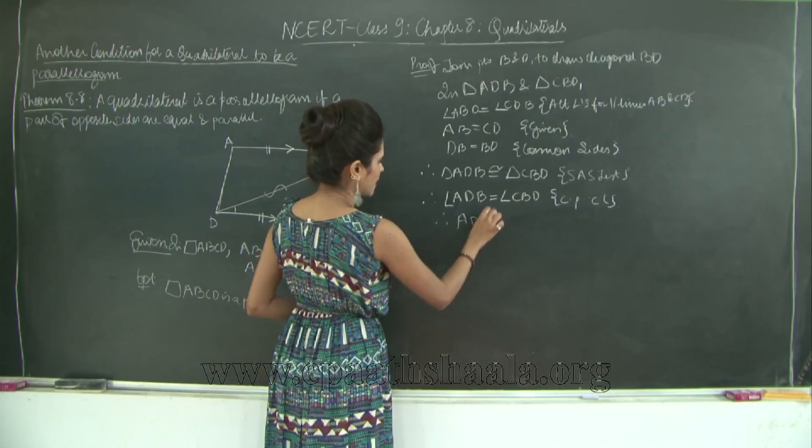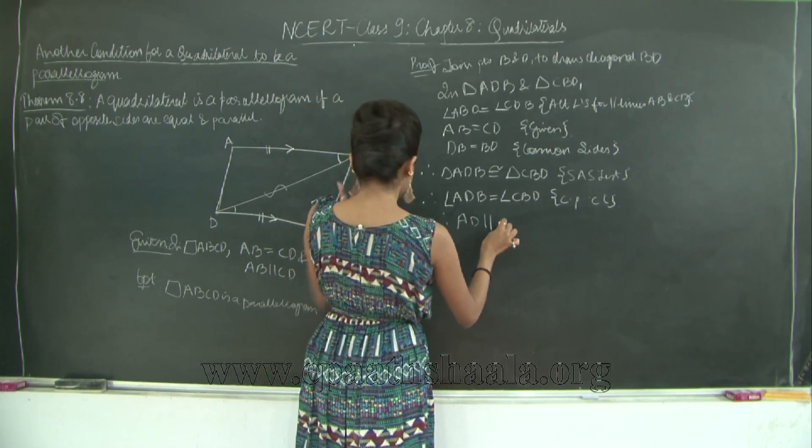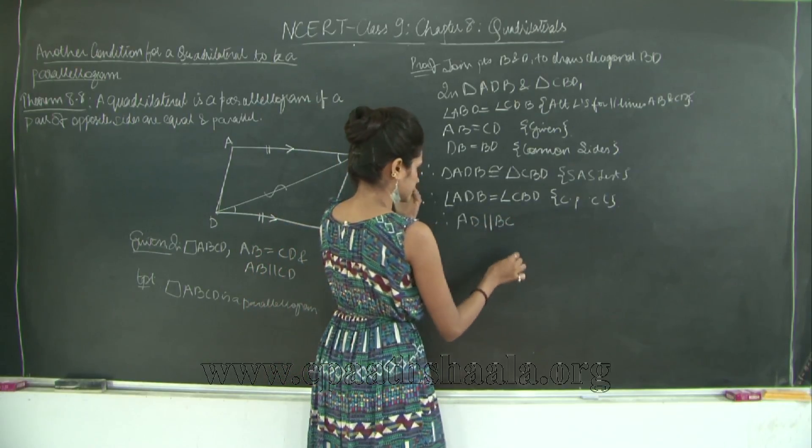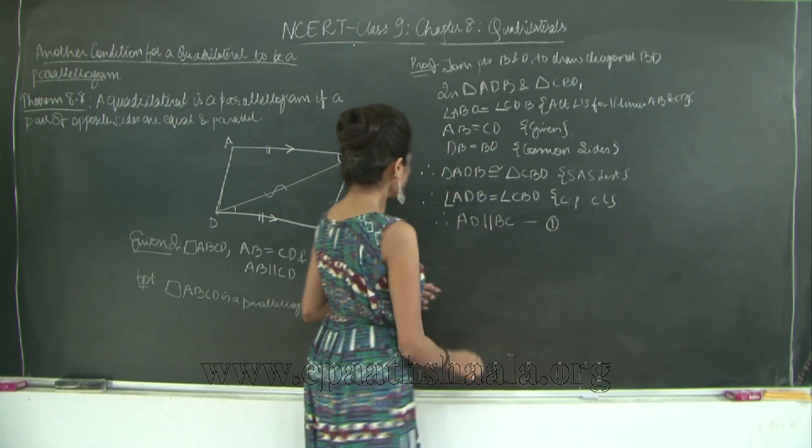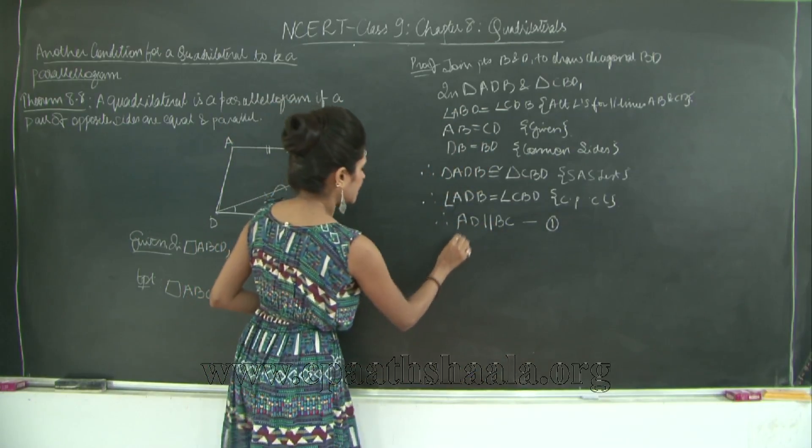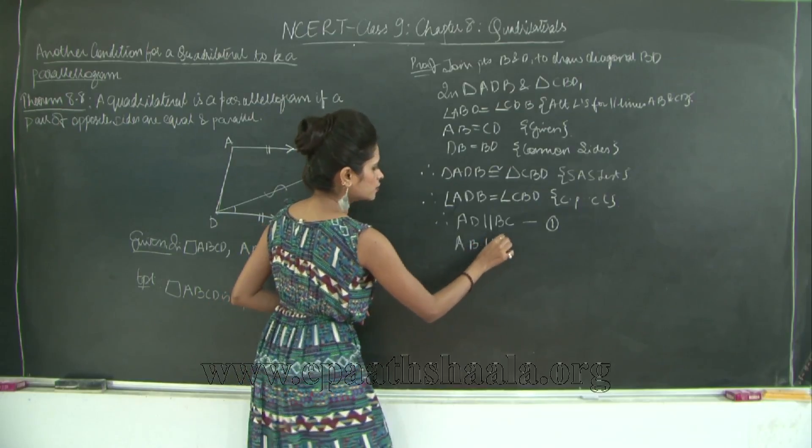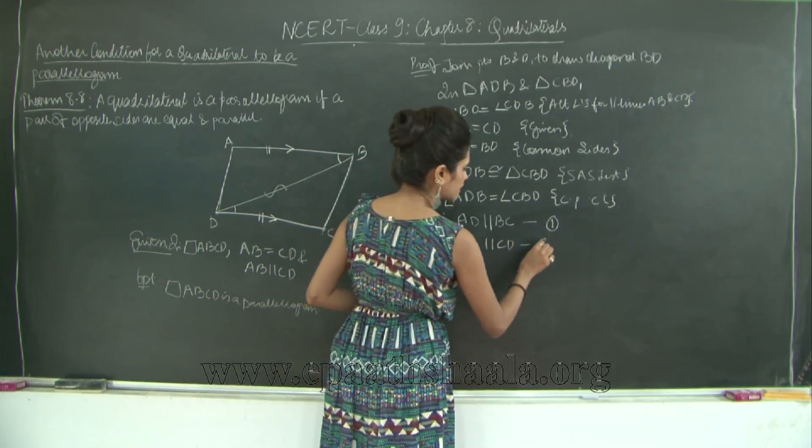Therefore angle ADB is equal to angle CBD, therefore AD is parallel to BC. I will mark this as 1. Also I have AB is parallel to CD. This is given.